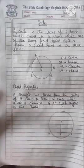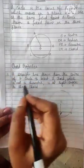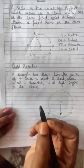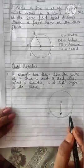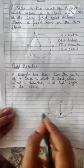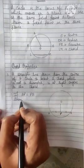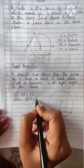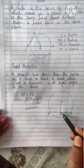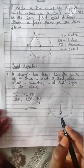In this class we will discuss chord properties. The first property: a straight line drawn from the center of a circle to bisect a chord which is not a diameter is at right angles to the chord. Here, AB is the chord and OP is the line bisecting chord AB. If AP equals PB, then angle OPA equals angle OPB equals 90 degrees. So if the line from the center bisects the chord, it makes an angle of 90 degrees at P. This is the first property of the chord.